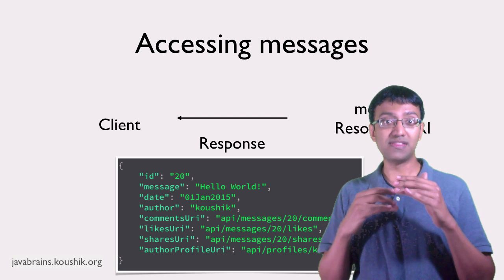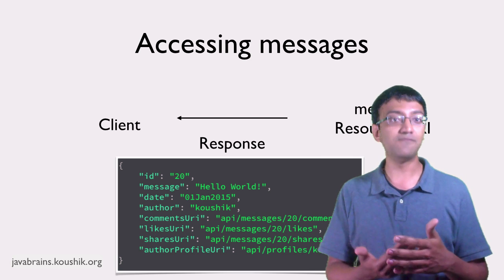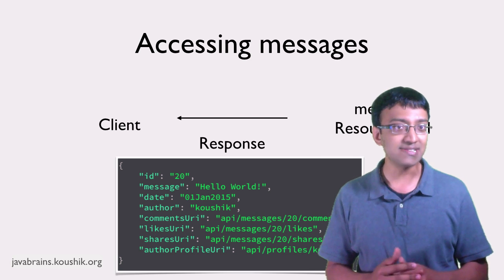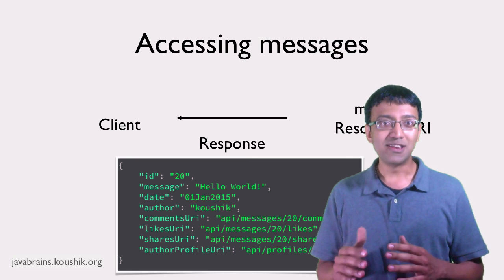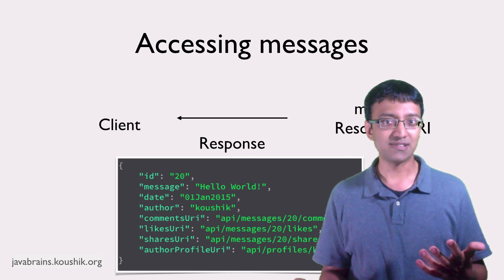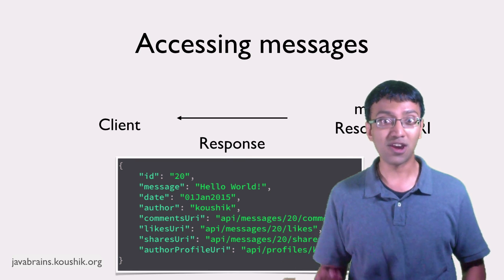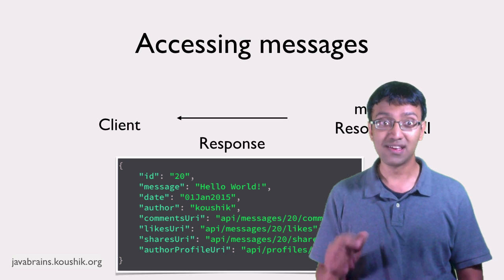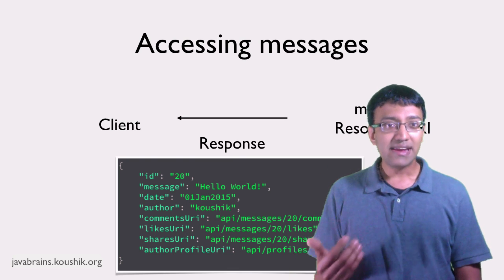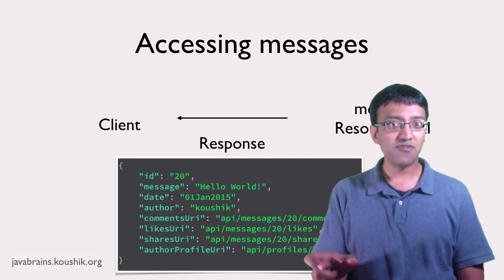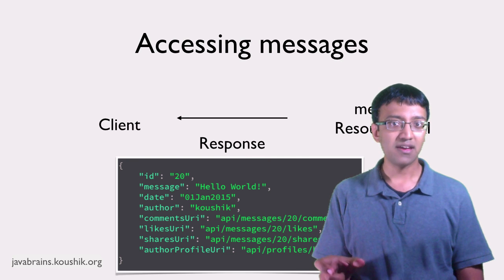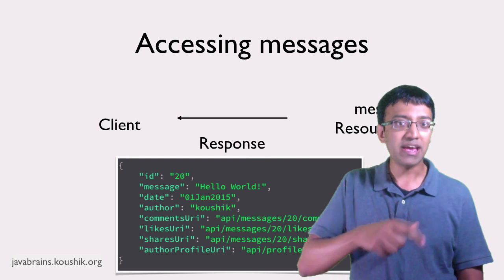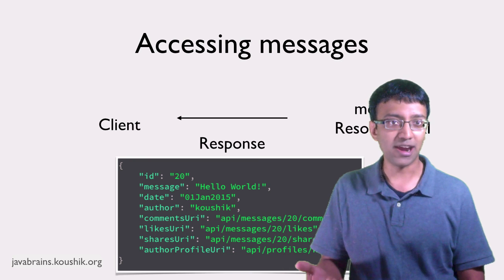So, the web service is basically being super helpful to the client by providing all these links in the response. It's similar to hyperlinks in websites. Whether the client wants to use it or not doesn't matter. But if they want it, it's there. Okay? So, the client developer just picks up the value of the right URI from the previous response and makes subsequent calls to those URIs.